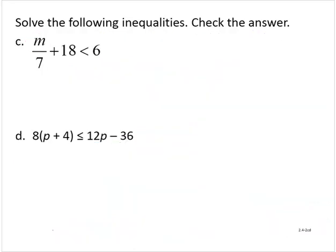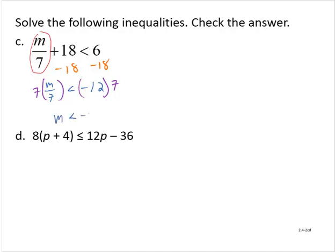Exercise c: m over 7 plus 18 is less than 6. I can isolate the variable term by subtracting 18, so I'd have m over 7 is less than negative 12. Now, to isolate the variable, I multiply through by 7. Notice I'm multiplying both sides by a positive number, so I do not need to flip the symbol of inequality. And so then m is less than negative 84.